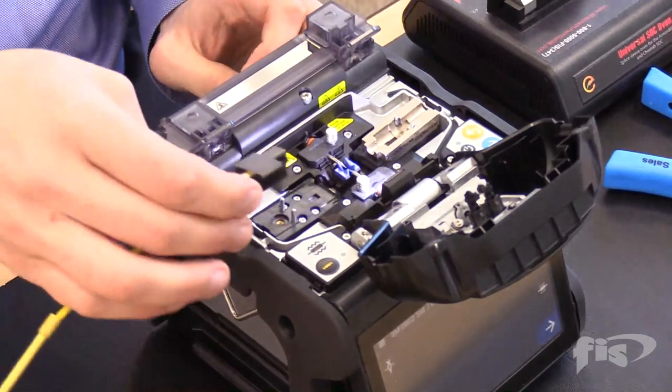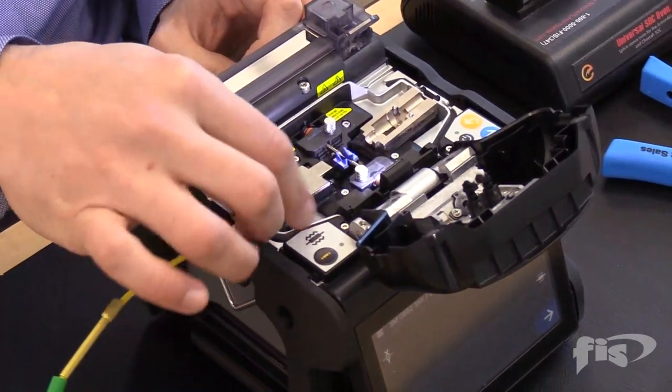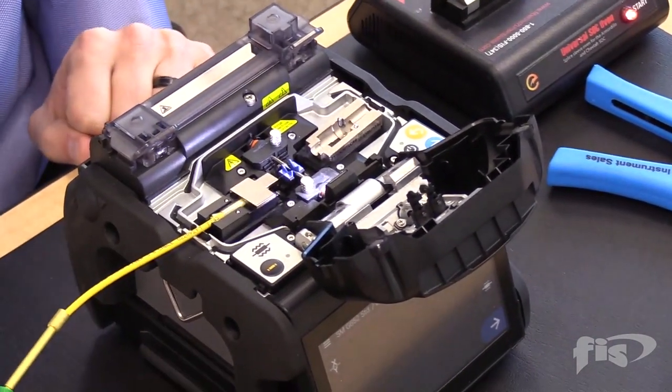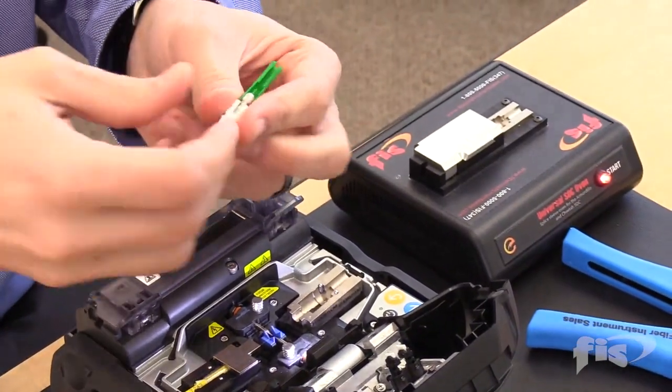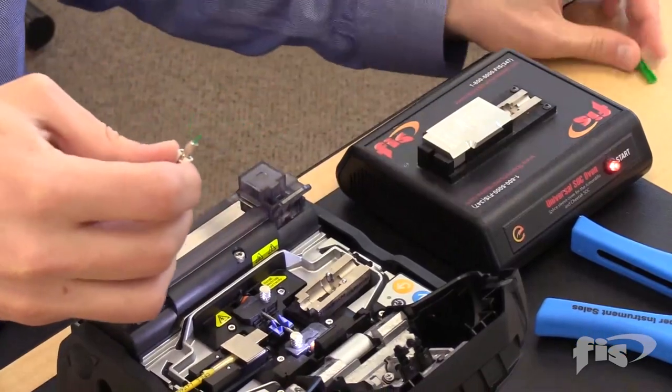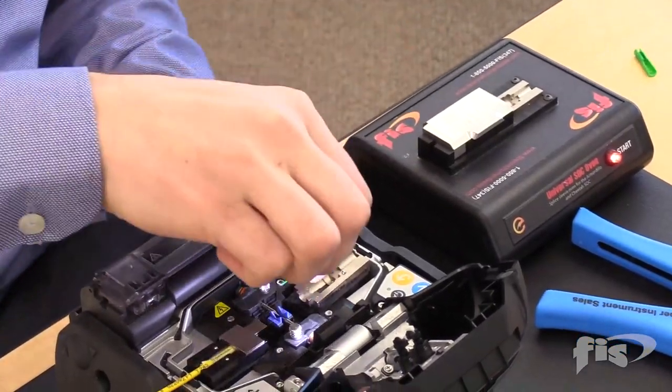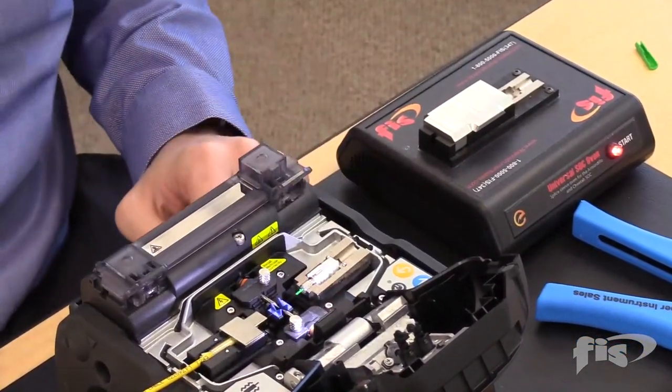Next, take the cleaved fiber that is in the holder and place it into the splicer. Take off the dust cap and save it for after the installation. Remove the cleave protector on the connector and pull away without touching the fiber. Place the connector into the connector holder.